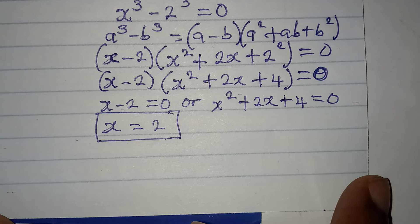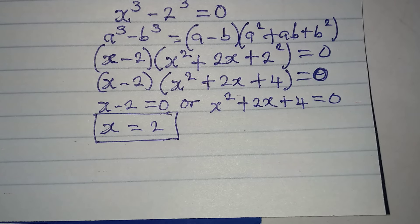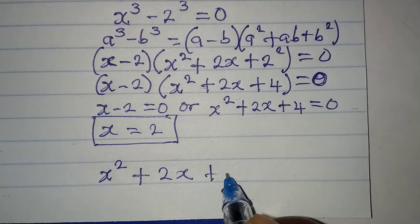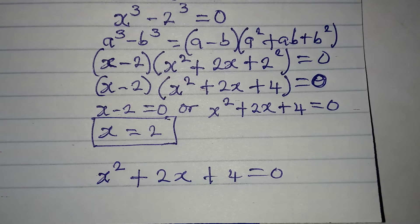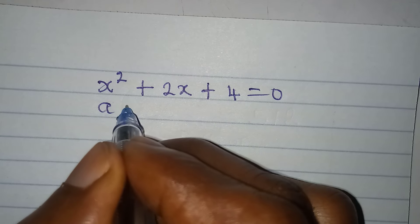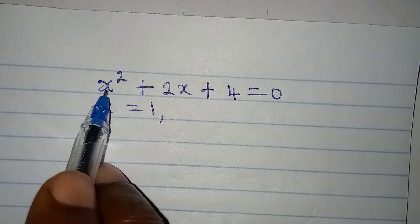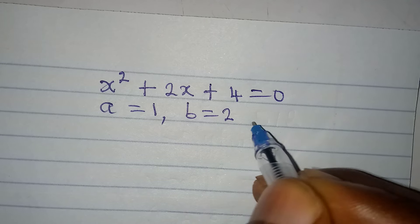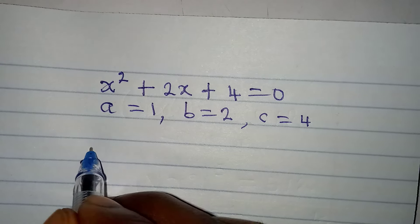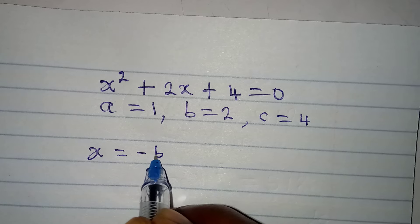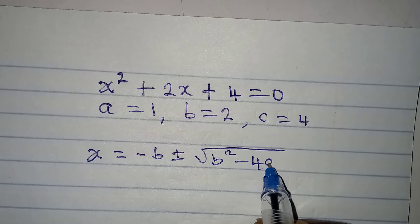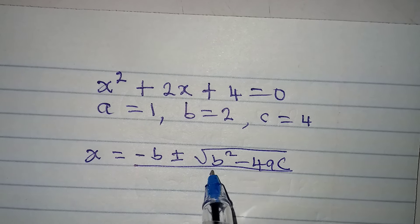Remember, we're looking for three solutions because the equation is cubic. Now we solve x squared plus 2x plus 4 equals 0 using the quadratic formula. From this equation, a equals 1 (the coefficient of x squared), b equals 2, and c equals 4 (the constant). The formula is x equals minus b plus or minus the square root of b squared minus 4ac, all divided by 2a.